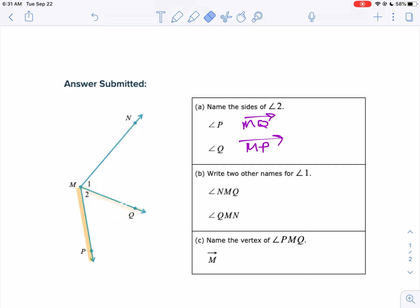Let's talk about the good part. On letter B, when you name angle 1, you correctly named them angle NMQ and angle QMN. Just make sure M is in the vertex, and the order doesn't matter.